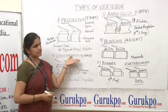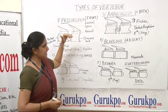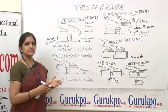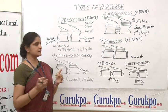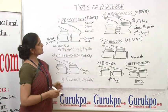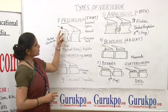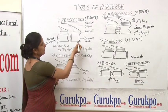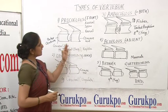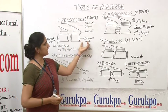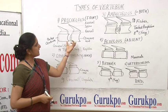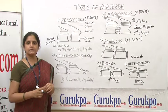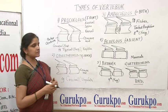Based on the shape of the centrum, there may be different types of vertebrae present in different classes from amphibians to mammals. The first type is called procoelous. The name suggests: 'pro' means in front and 'coelous' means cavity. This means the anterior part of the centrum is concave, forming a cup-like structure. Procoelous vertebrae are mainly present in the typical vertebrae of frogs and most reptiles.